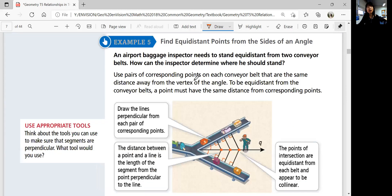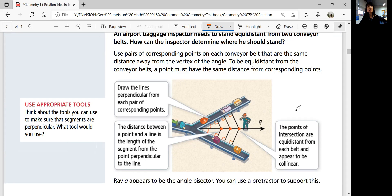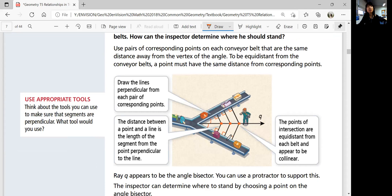All right, what about example 5? Finding equidistant points from the sides of an angle. Here's a real-world example. An airport baggage inspector needs to stand equidistant from two conveyor belts. How can the inspector determine where he should stand? He needs to stay equidistant from two conveyor belts. We got two conveyor belts right here. So you can use pairs of corresponding points on each conveyor belt that are the same distance away from the vertex of the angle.